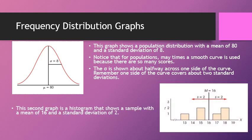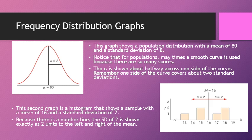A second graph you can use is the histogram. This shows a sample with a mean of 16 and a standard deviation of 2. So you put a black line at the mean of 16 and write m equals 16. The standard deviation is 2, and because there's a number line here, the standard deviation of 2 can be shown as exactly two units.